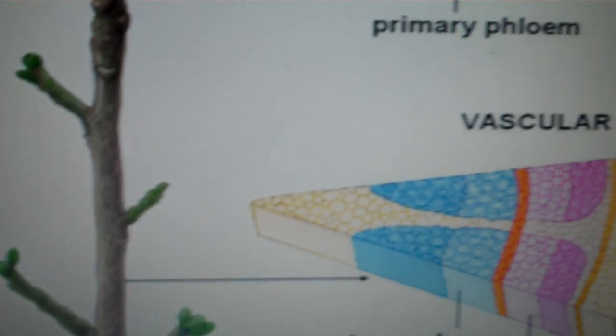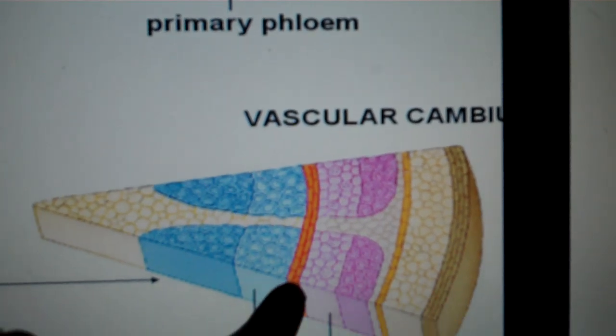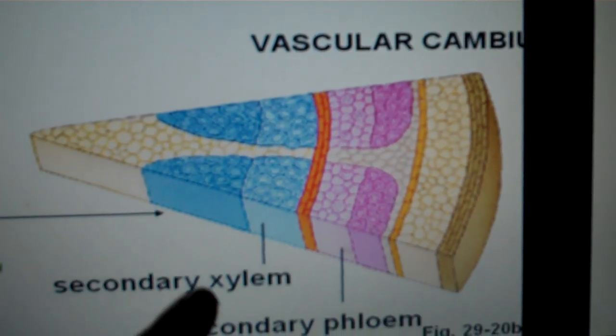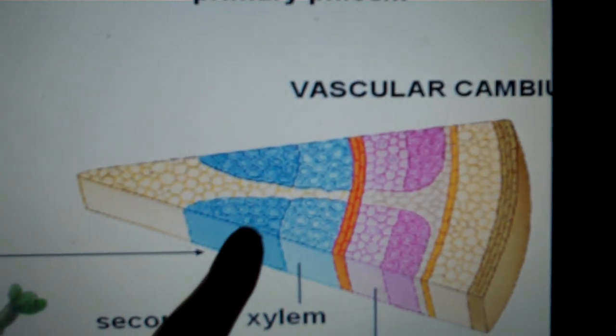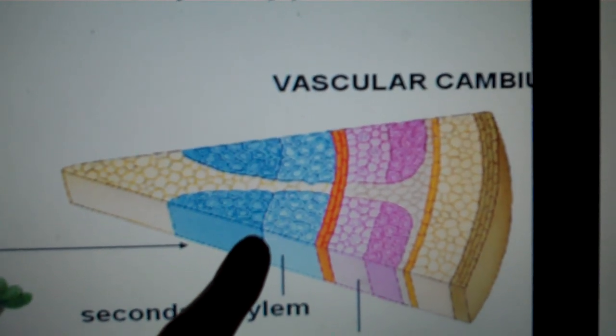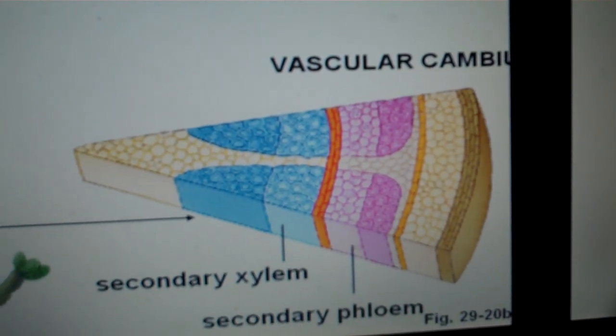Secondary growth occurs because the vascular cambium adds layers of secondary xylem and secondary phloem. Over time, this addition of secondary xylem increases the girth or width of the tree.